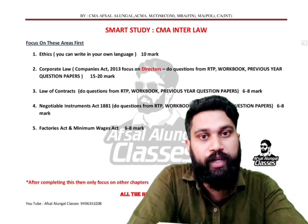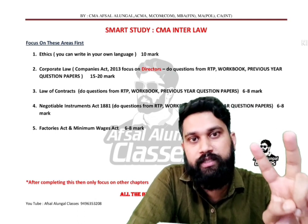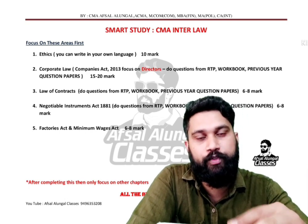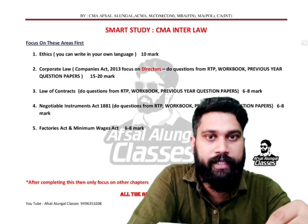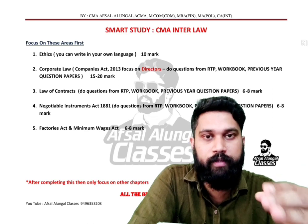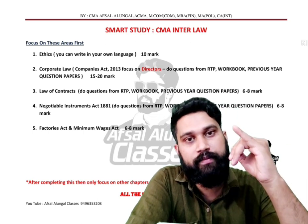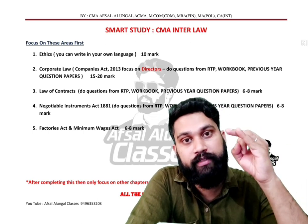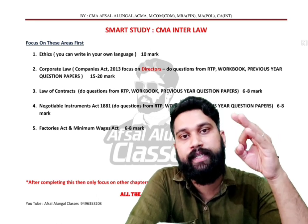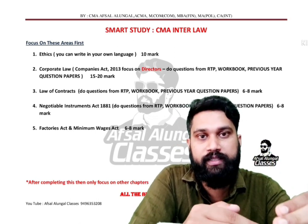Contract Act and Negotiable Instrument Act are very important — practical-type questions will come from these two acts. You can expect 12 to 15 marks from them. So to summarize: Ethics gives 10 marks, Directors gives 15 to 20 marks — together that's 30 to 35 marks — and Contract Act plus Negotiable Instrument Act gives another 15 marks, totalling 45 to 50 marks.